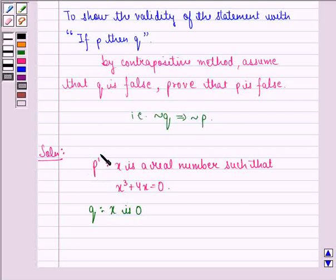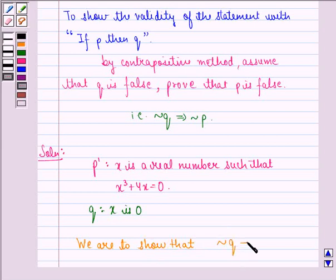The first is P' that is X is a real number such that X³ plus 4X equals 0, and the other one is Q, that is X is 0. So here we are to show that Q is not true implies P' is not true.